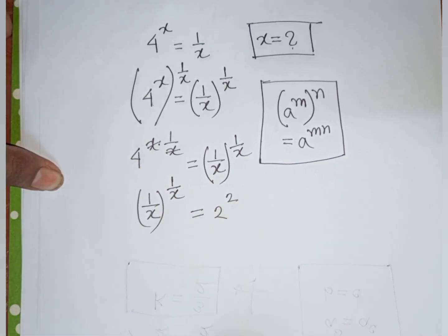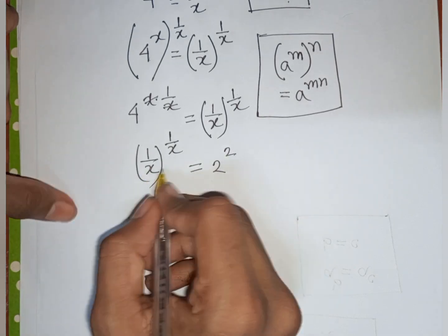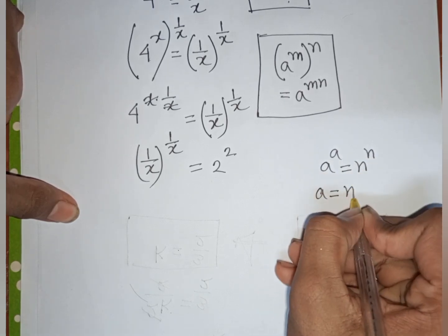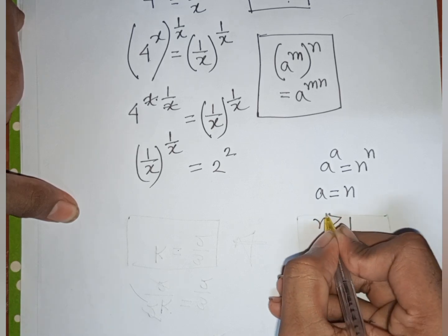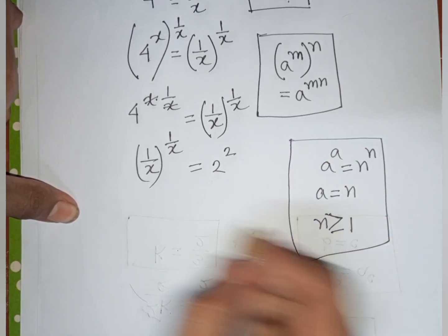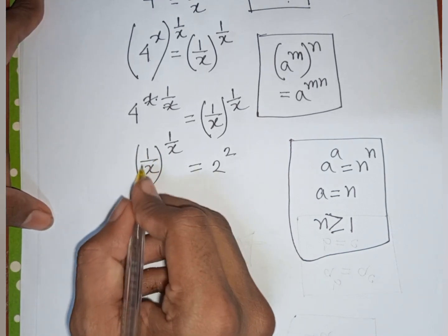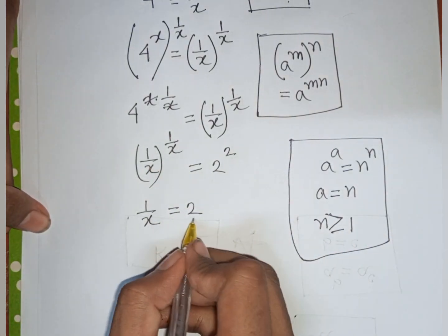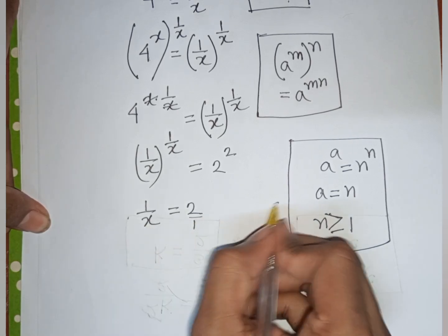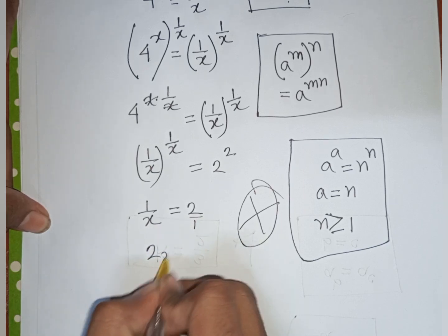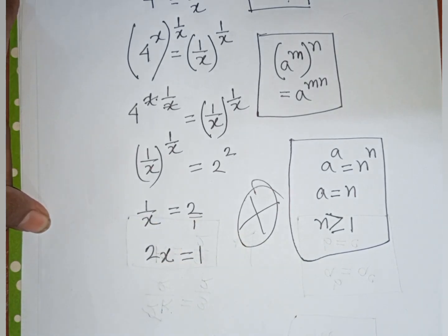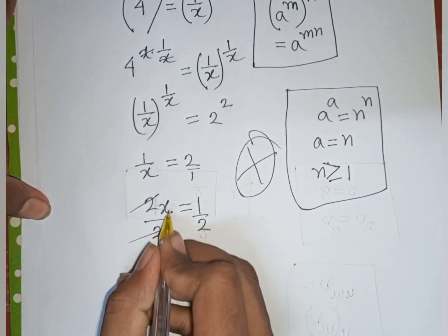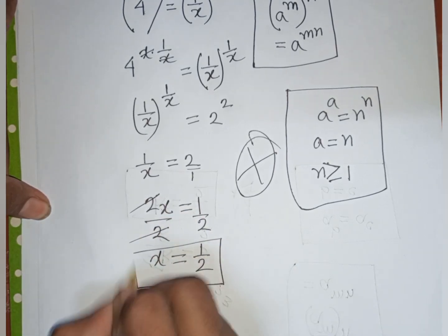We use the rule that a^a equals n^n, so a equals n, valid when n is greater than or equal to 1. Writing 4 as 2^2, we compare and find 1/x equals 2. Cross-multiplying gives 2x equals 1, so dividing both sides by 2 yields x equals 1/2. This is our final answer.